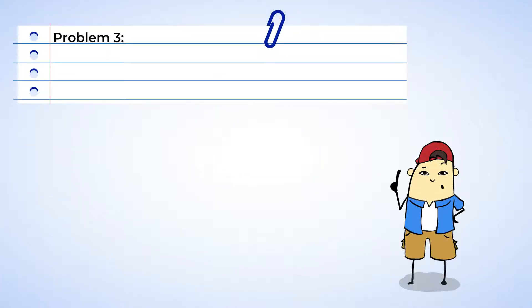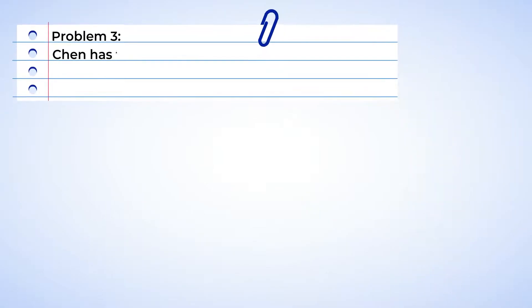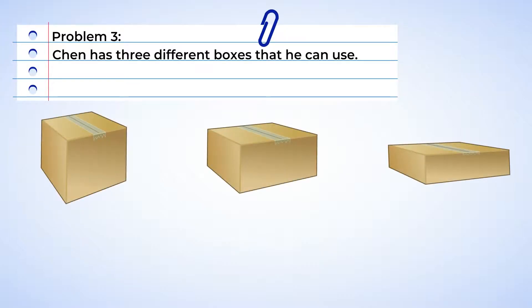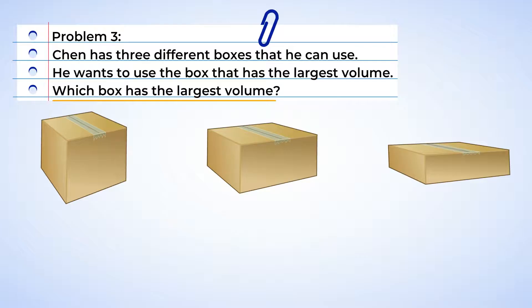Ooh, what's Chen doing? Aha! He is looking for the biggest box he has in the garage to put away all of his sports gear. Well, Chen has three different boxes that he can use, and he wants the box that has the largest volume. So let's help him figure out which box has the largest volume.